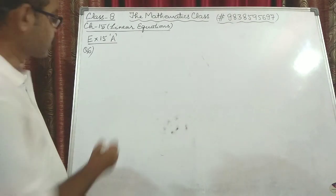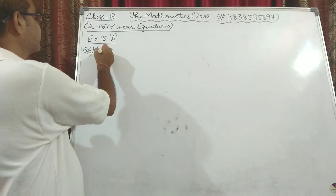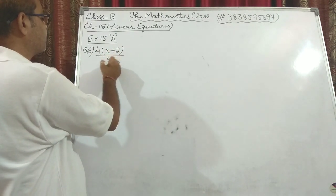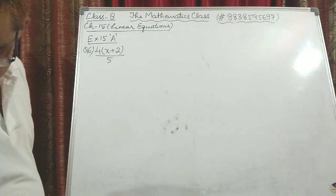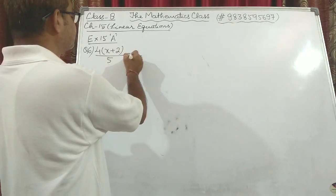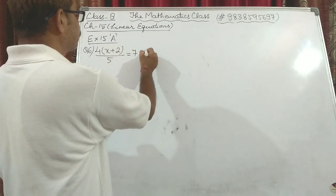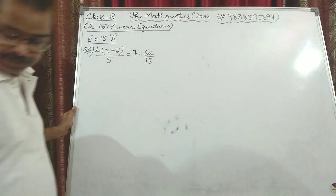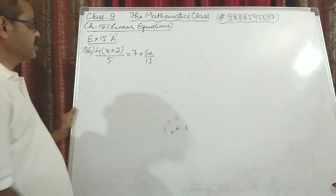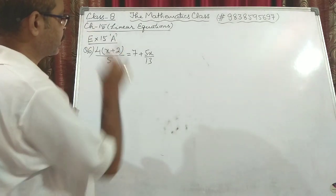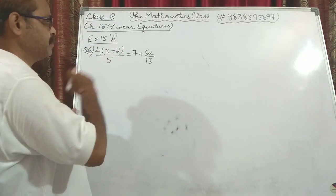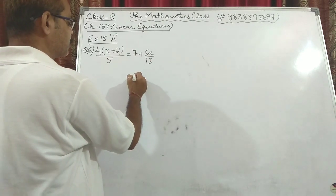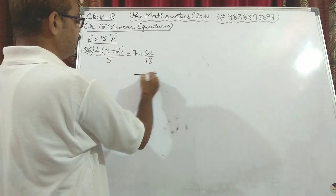Now question number 6: 4(x + 2)/5 = 7 + 5x/13. In this question it is better to first take the LCM on the right-hand side. The LCM of the right side will be 13.